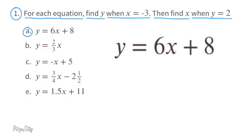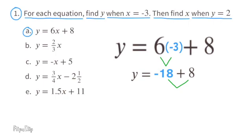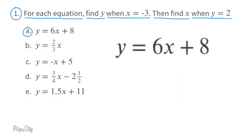So it reads y equals 6 times negative 3 plus 8. 6 times negative 3 equals negative 18, so y equals negative 18 plus 8. Negative 18 plus 8 equals negative 10, so y equals negative 10 when x equals negative 3. Now we need to substitute the y with a 2.